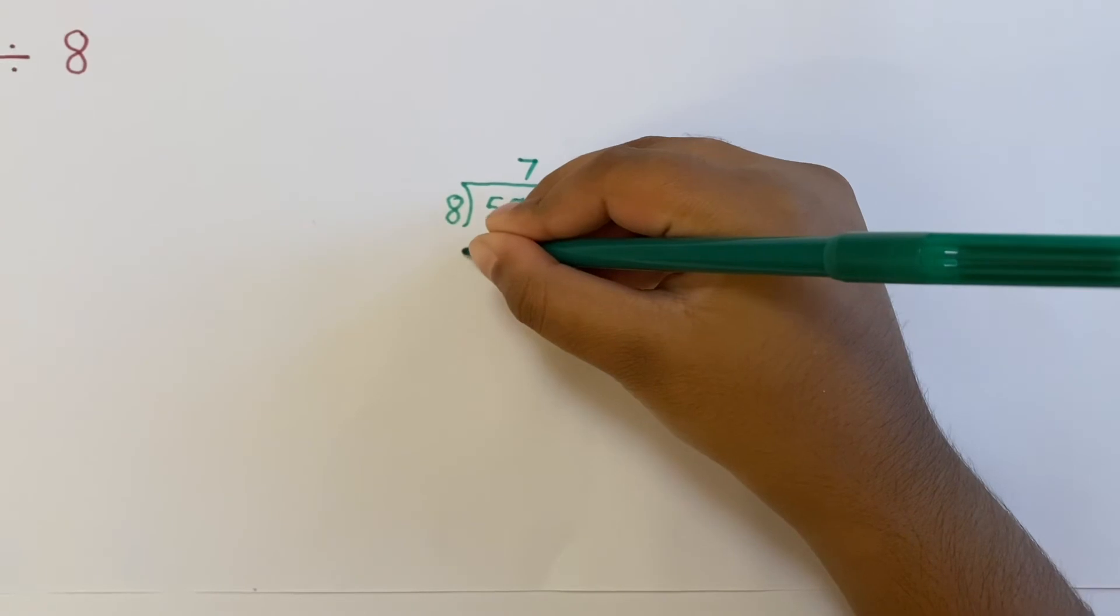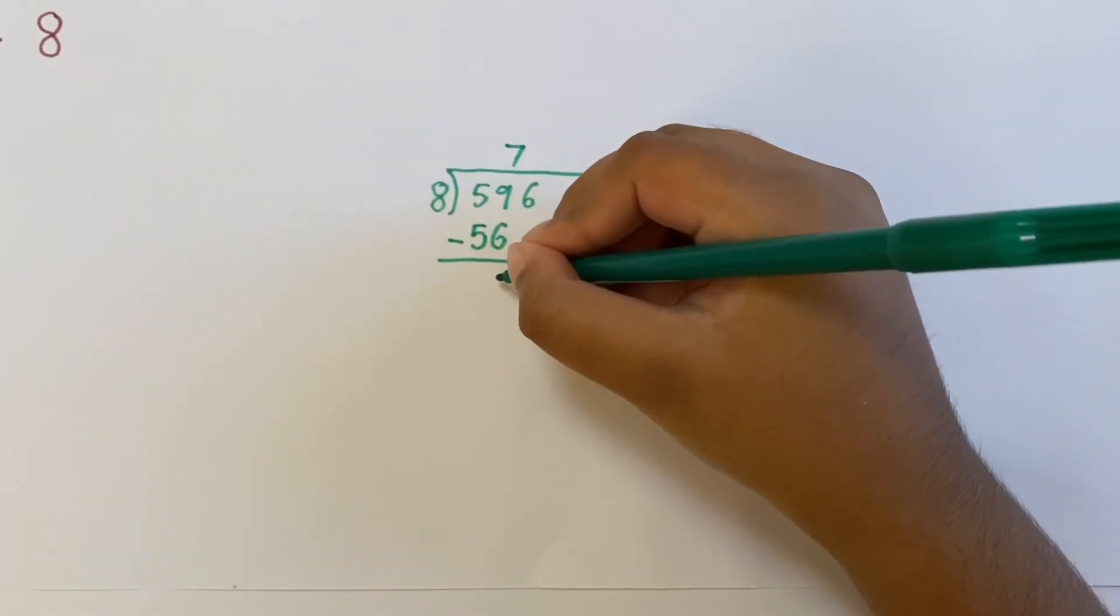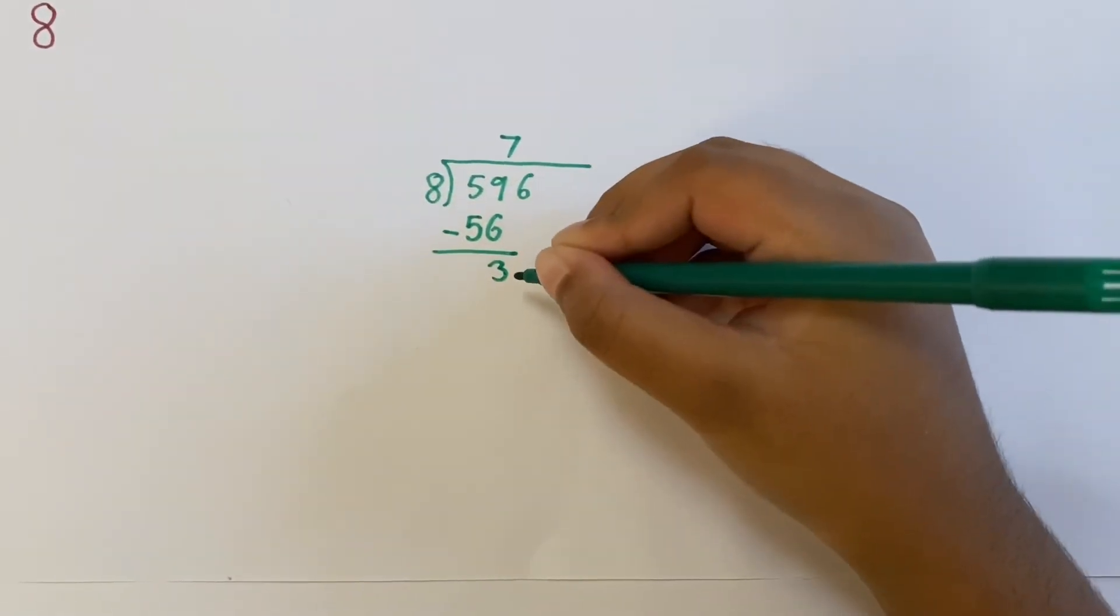59 subtract 56 is 3. The remainder is 3.